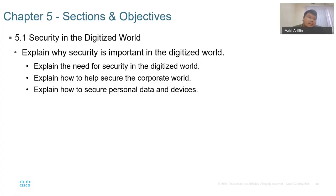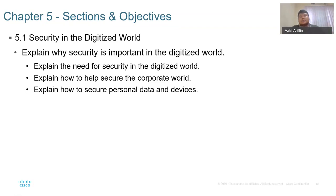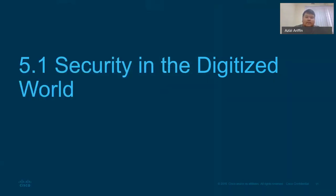The objective is security in a digitized world. This chapter will explain why security is important in the digitized world. The things are now able to collect personal information — our health information, where we are going, and everything — so the data needs to be secure. Also, the digitized world relies heavily on computers, so computers need to be secured from vulnerabilities. This chapter will also explain how to secure the corporate world and how to secure personal data and devices.